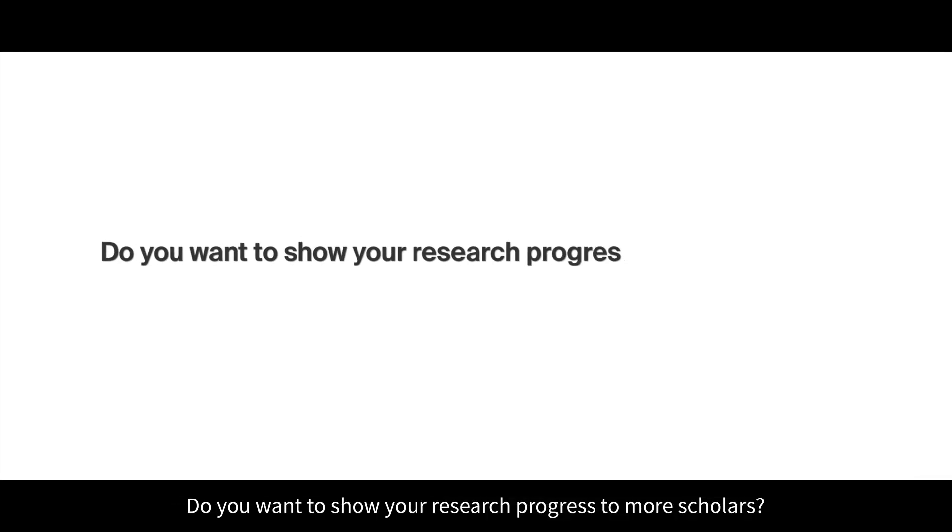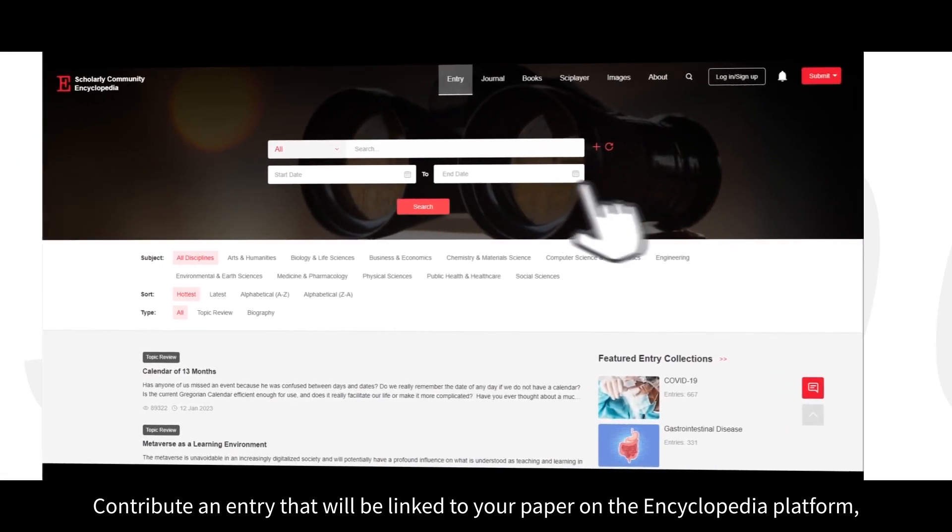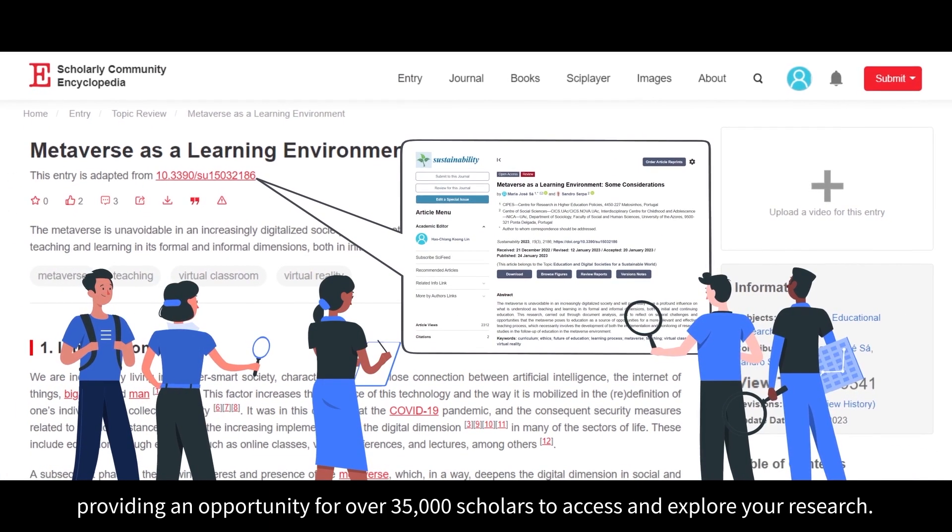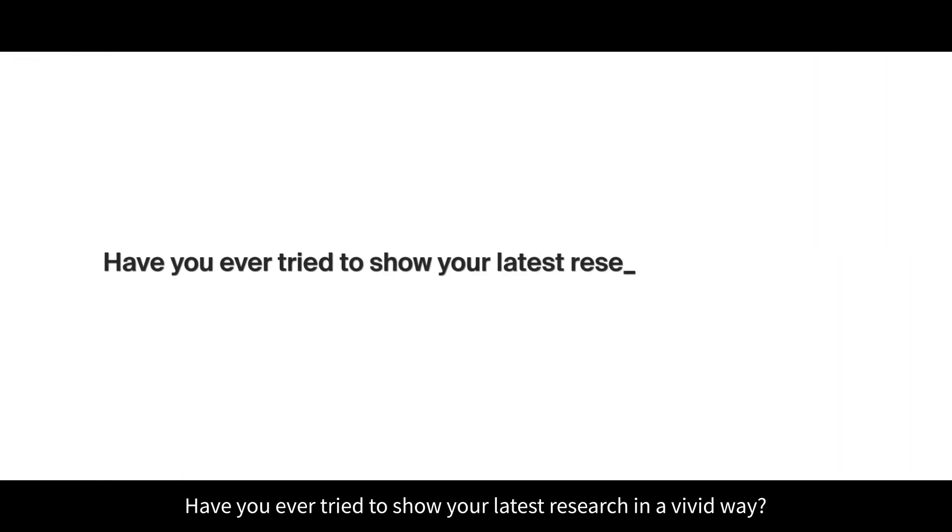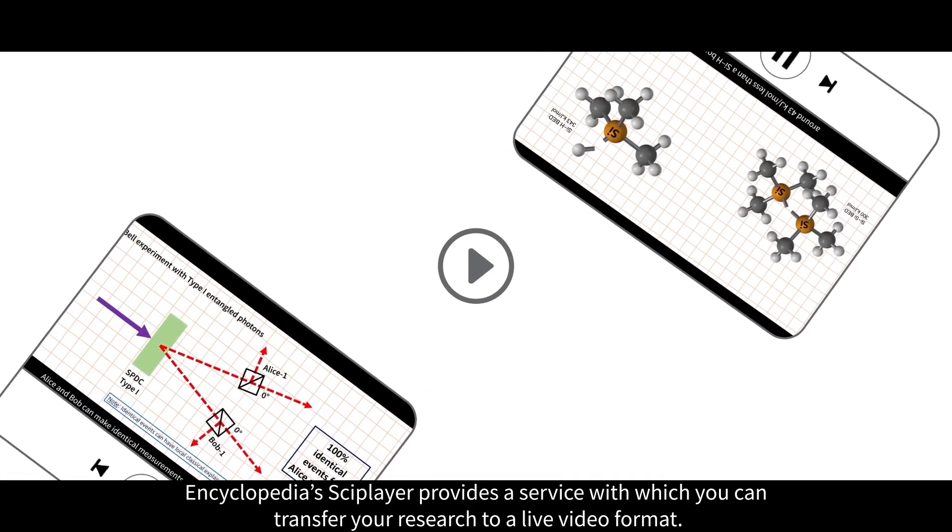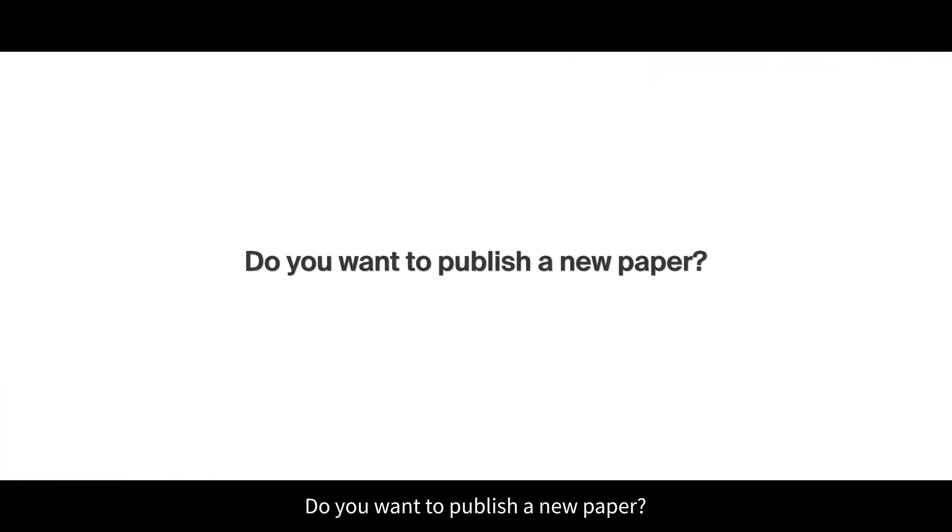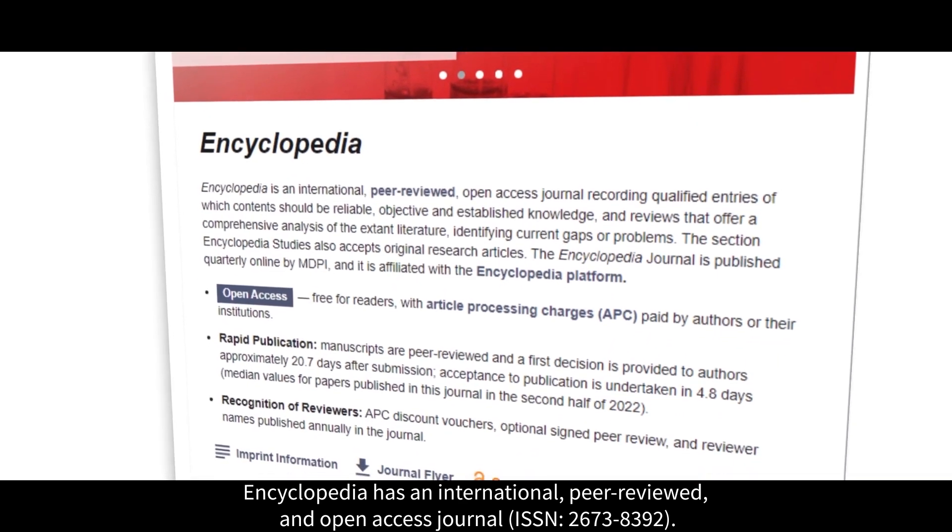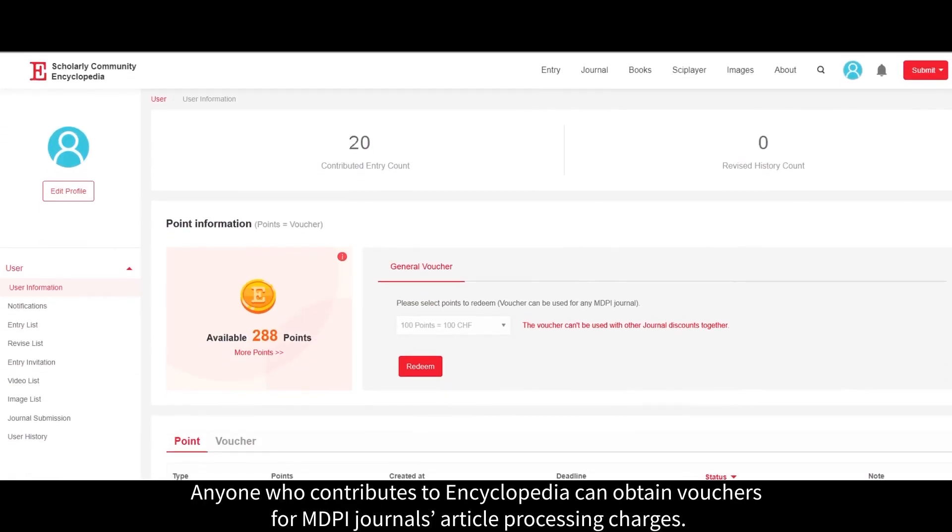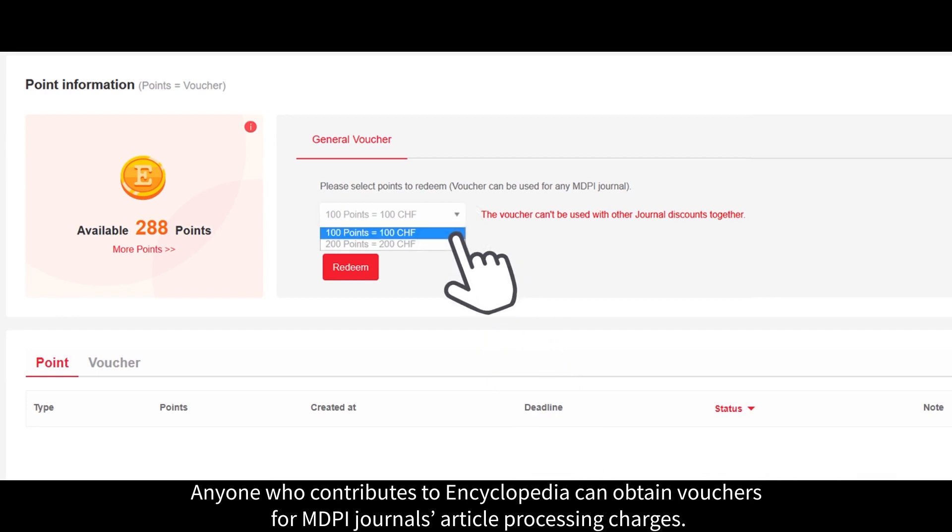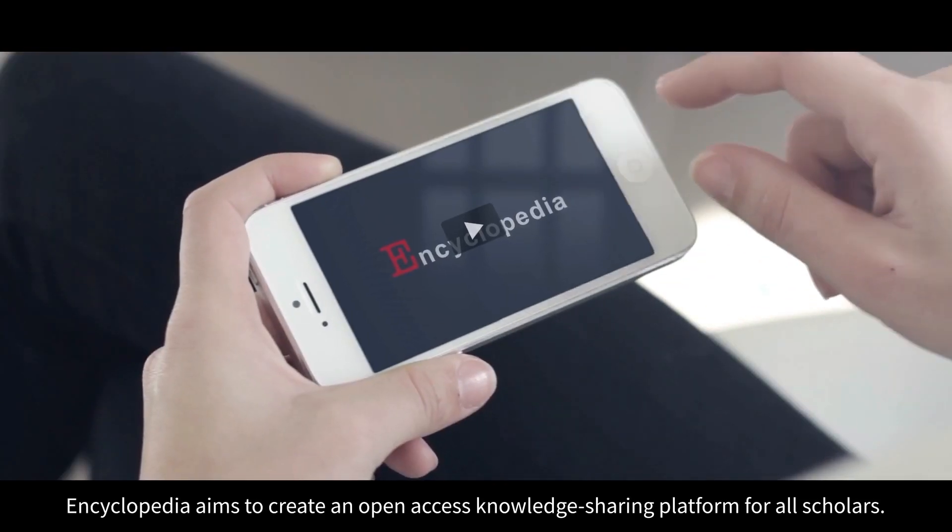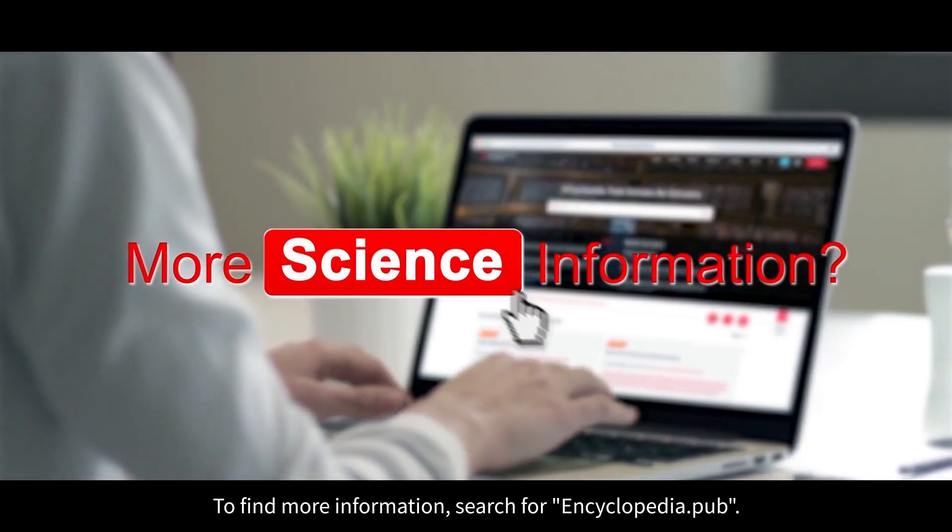Do you want to show your research progress to more scholars? Contribute an entry that will be linked to your paper on the Encyclopedia platform, providing an opportunity for over 35,000 scholars to access and explore your research. Encyclopedia SciePlayer provides a service with which you can transfer your research to a live video format. Encyclopedia has an international peer-reviewed and open access journal. Anyone who contributes to Encyclopedia can obtain vouchers for MDPI journals' article processing charges. Encyclopedia aims to create an open access knowledge sharing platform for all scholars. To find more information, search for Encyclopedia or encyclopedia.pub.